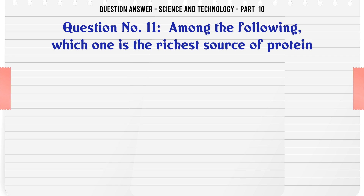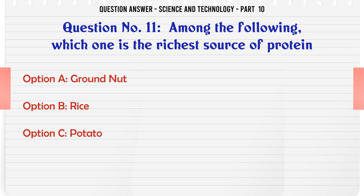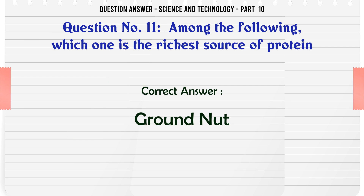Among the following, which one is the richest source of protein? A. Ground nut. B. Rice. C. Potato. D. Apple. The correct answer is Ground nut.